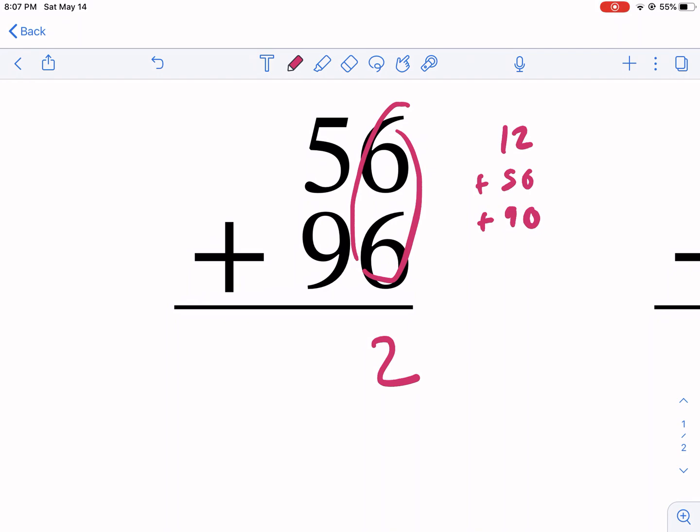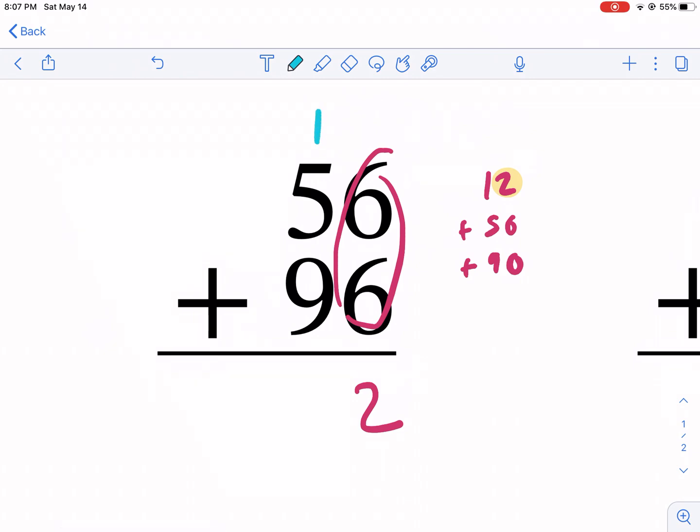Instead, what we're going to do is we're going to drop the two down and leave that in the tens place, but then we still have to do something with that extra one. And what we do is we bop it over. That's my word for the day. Bop it over to the tens place.